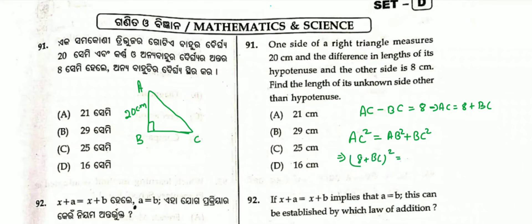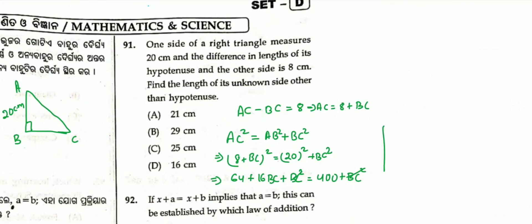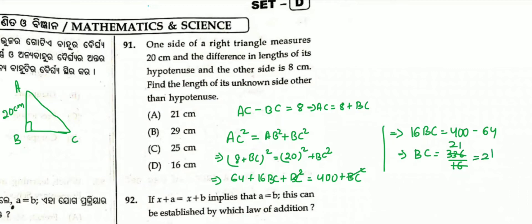So, (8 + BC)² = AB² + BC². That gives 64 + 16·BC + BC² = 20² + BC², which is 400 + BC². BC² cancels, so 16·BC = 400 − 64 = 336, giving BC = 336/16 = 21. So BC = 21 cm. Option A is correct.